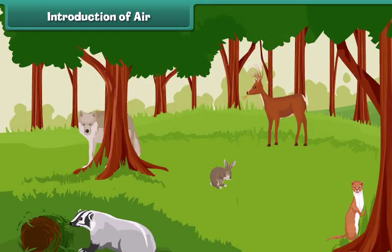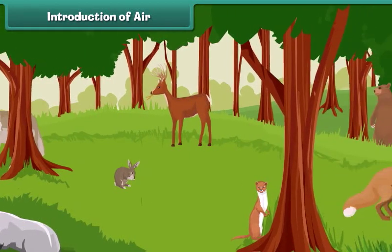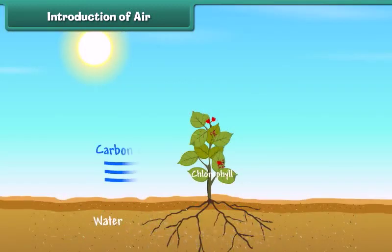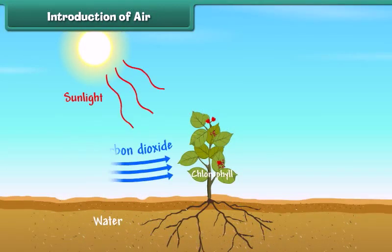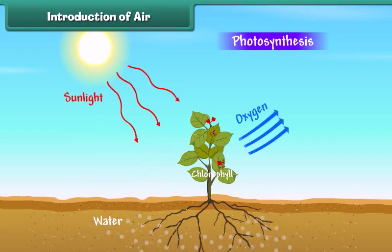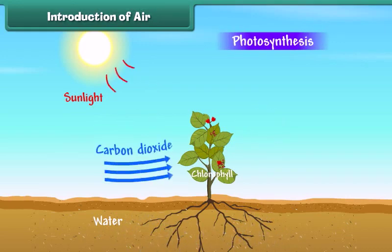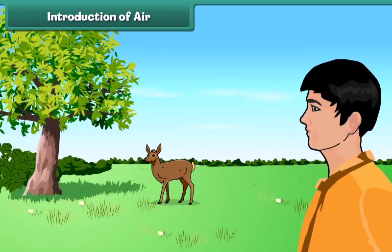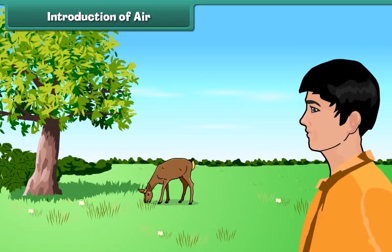Air is very important for almost all life on earth including plants and animals. Plants need carbon dioxide from air to do photosynthesis and release oxygen into the air. Human beings and animals need to breathe air to get the oxygen they need to survive.